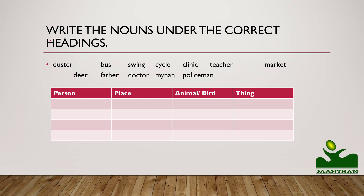In this question, write the nouns under the correct headings. The headings are given: person, place, animal or bird, or thing. You have to read these words — like duster. Duster would come under which heading? It would come under a thing, so we write duster there. Likewise: bus, swing, cycle, clinic, teacher, market, deer, father, doctor, manor, policeman — you have to write these nouns under the correct headings.